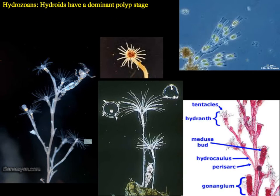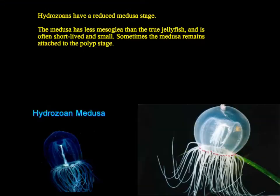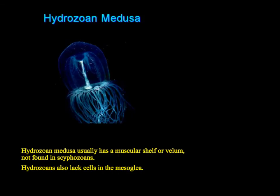The hydrozoans have a dominant polyp stage and a reduced medusa stage, spending most of their life in the polyp form attached to the ground, though they do release medusa buds. Those medusa buds move out into the water column but have a fairly short life cycle stage and are also really small relative to other medusa forms. The hydrozoan medusa are smaller, have less mesoglia, less jelly, and have a muscular shelf around the bottom of the bell. Some even remain attached to the polyp form. Additionally, hydrozoan medusa lack cells in the mesoglial part of the bell.